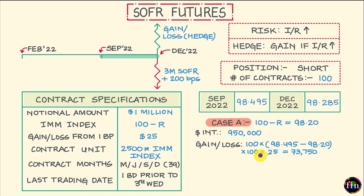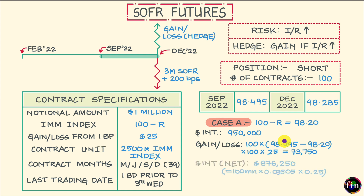This tells me that my gain or loss works out to $73,750, which means my net interest cost — the interest cost minus this gain — works out to $876,250. This is my net interest cost after taking the gain or loss from my hedge into account.